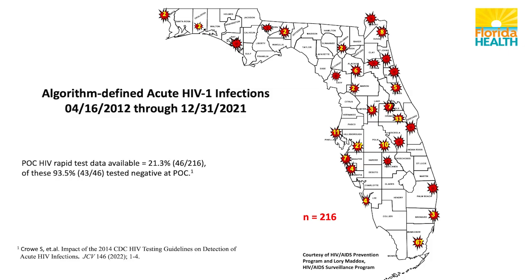As for COVID impact, in 2019 — one of our highest years — we identified 49 acute cases. In 2021, in the midst of COVID, that dropped down to just 10 cases identified for that year. This is clearly an indication of fewer individuals self-referring to clinics or clinic restrictions.